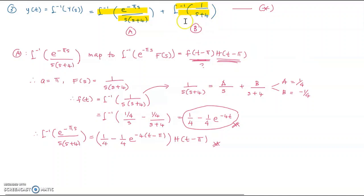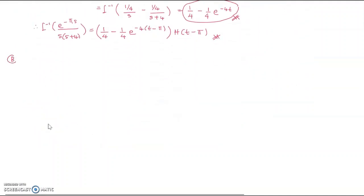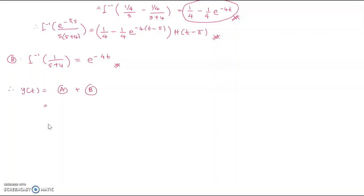For part b, find the inverse of 1 over (s+4). This is straightforward — just refer to the table directly: the inverse is e^(−4t). Combining parts a and b, the final answer is y(t) equals [1/4 minus (1/4)e^(−4(t−π))]·H(t minus π) plus e^(−4t).